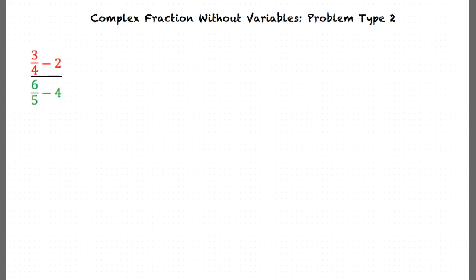This video will cover the topic Complex Fractions Without Variables, Problem Type 2. Our first example will be 3 over 4 minus 2, divided by 6 over 5 minus 4.